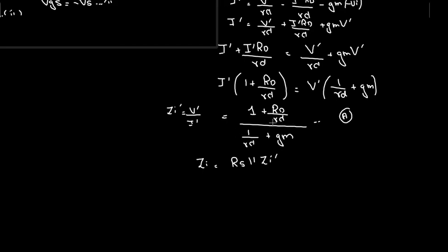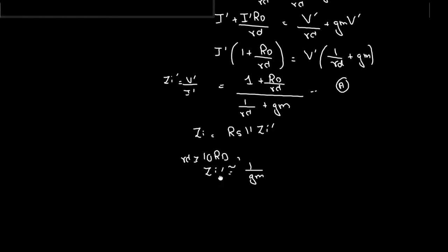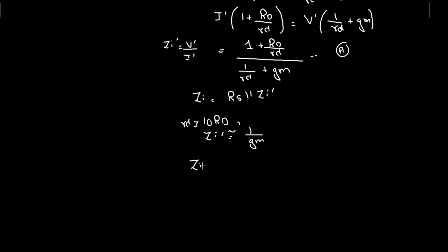As an approximation: if rd is at least 10 times greater than RD, rd can be treated as approximately infinite. In that case, the rd-dependent terms go to zero, and Zi' simplifies to 1/gm. Therefore, Zi approximately equals RS in parallel with 1/gm.